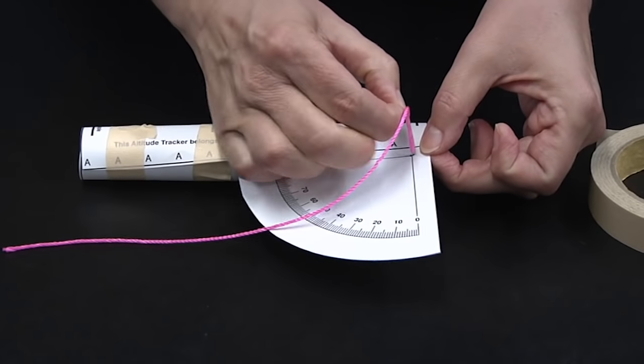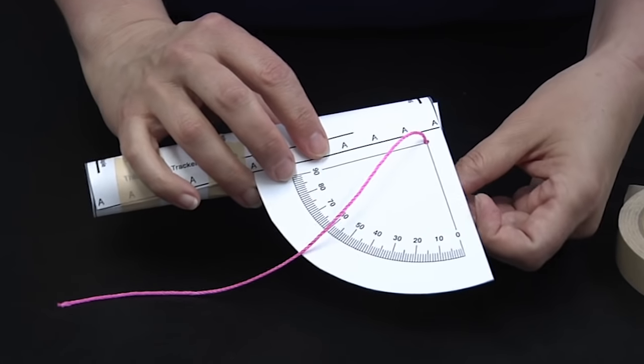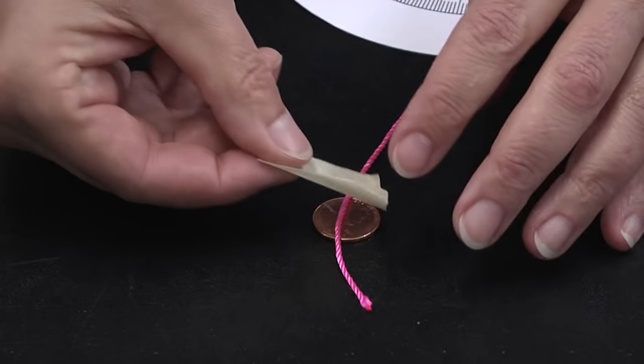Feed the end of the string through the hole and secure it to the back of your altitude tracker with a piece of tape. You're going to need a little bit of weight on that string, and that's where our penny comes in. Just tape your penny to the bottom of your string. So now you have an altitude tracker that can be used to sight your rocket and measure the angle of elevation.